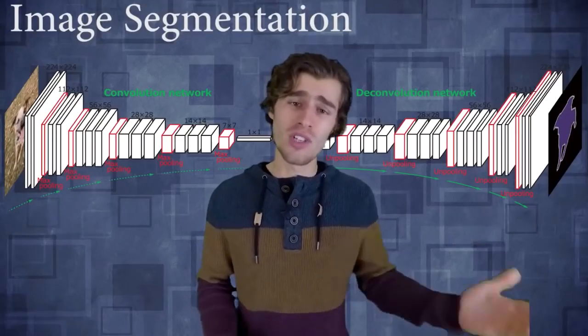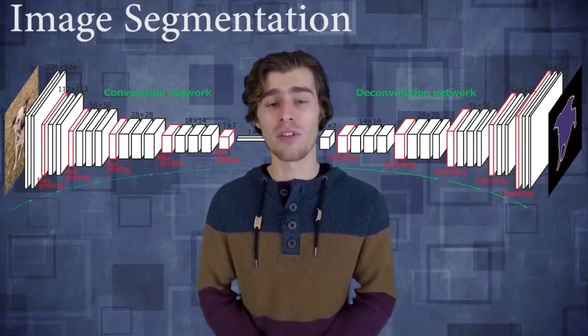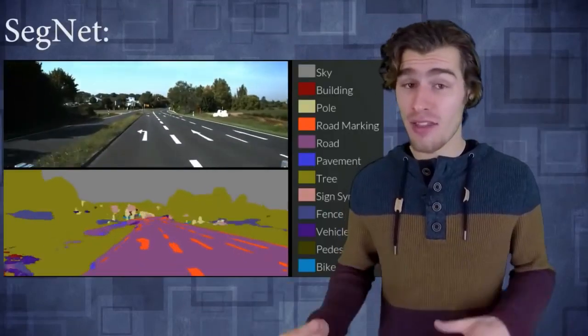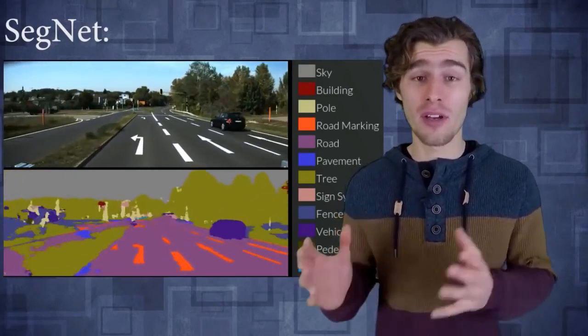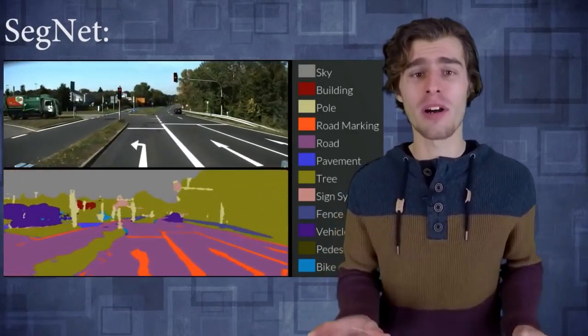For example, this tech can be used in self-driving cars to segment different objects of interest. Zander on Archive Insights does a pretty good job of explaining this on his variational autoencoder video. So check that out.